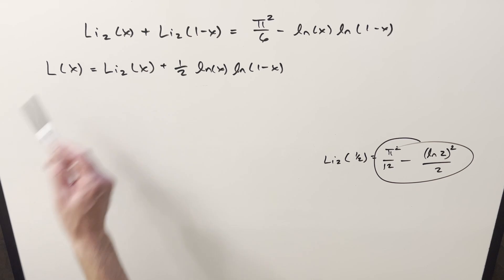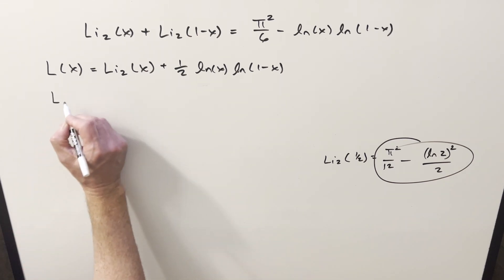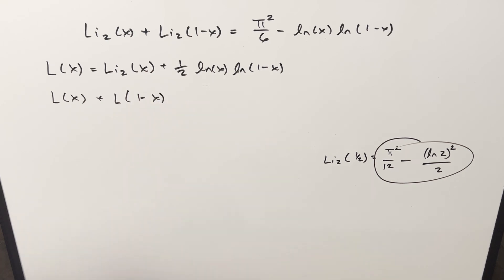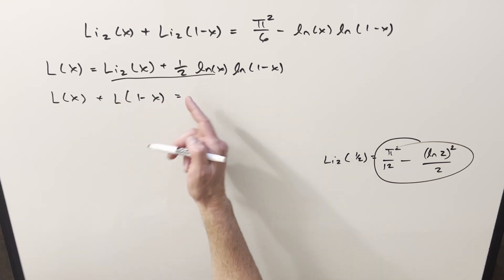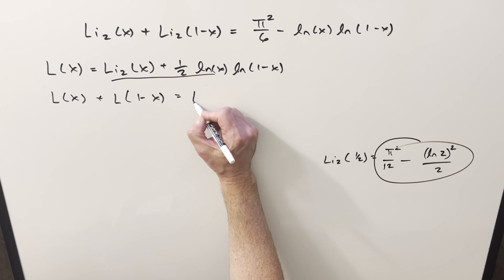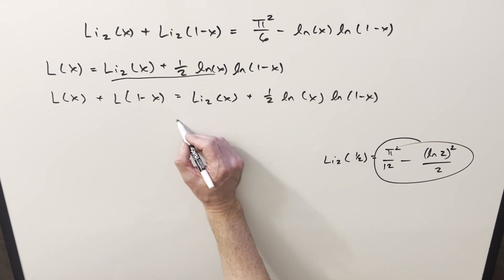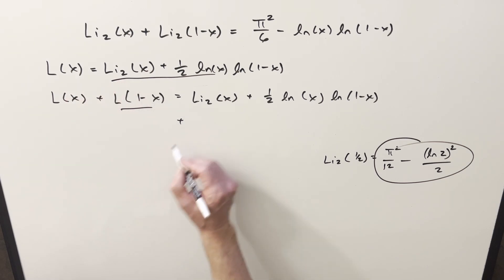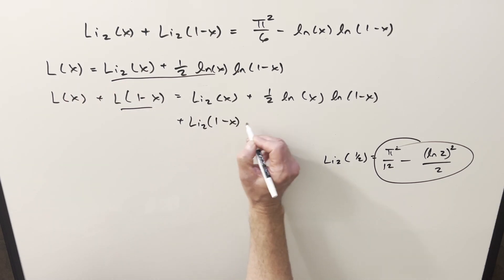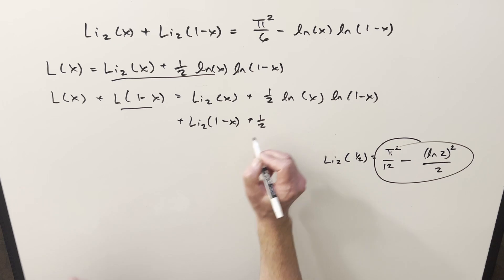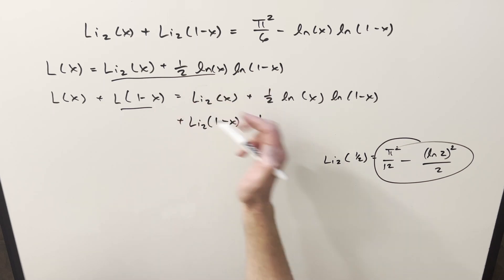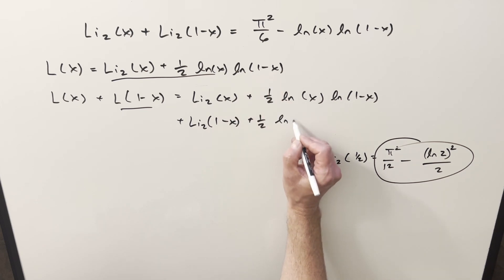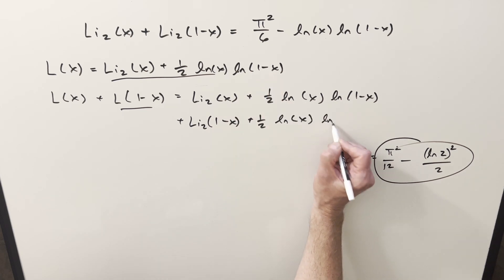For example, we'll find a reflection formula for this function: L(x) + L(1 − x). All I'm going to do is plug in. For L(x) we copy down the definition, and for the next part we plug 1 − x into the definition. When we plug 1 − x in, the logarithm argument reverts back, so we can write these as L(x) and L(1 − x).